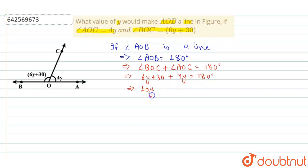From here we get 10y is equal to 180 degrees minus 30 degrees, that is 150 degrees. And this implies y is equal to 150 degrees by 10, that is equal to 15 degrees. Therefore, y is equal to 15 degrees.